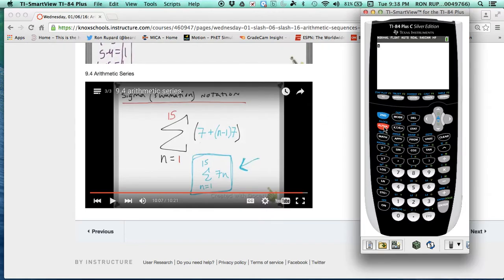Hit the alpha button, and then the window button. And if you see this summation sigma parentheses, that means you can do the easy way. But if you hit the alpha window button and that doesn't show up, that means you're going to have to do it the hard way.